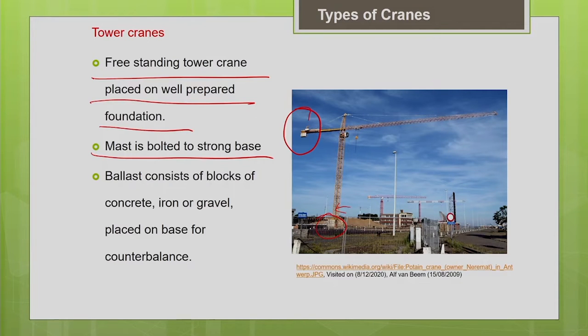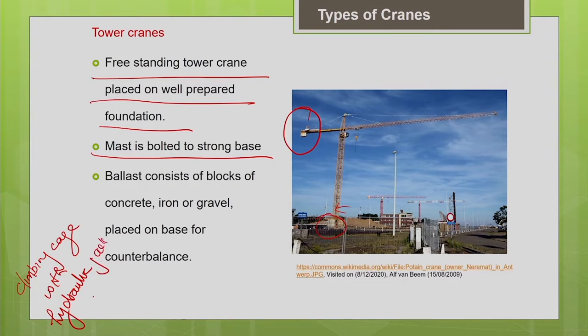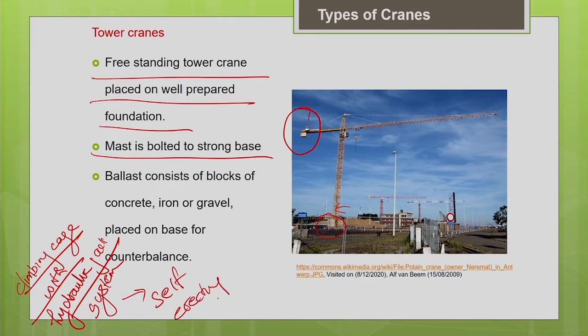Modern cranes have a climbing cage with a hydraulic jack system, which makes the erection of even top slewing tower cranes relatively easier and faster. With this climbing cage facility, cranes are self-erecting in nature, requiring less assistance from another crane.